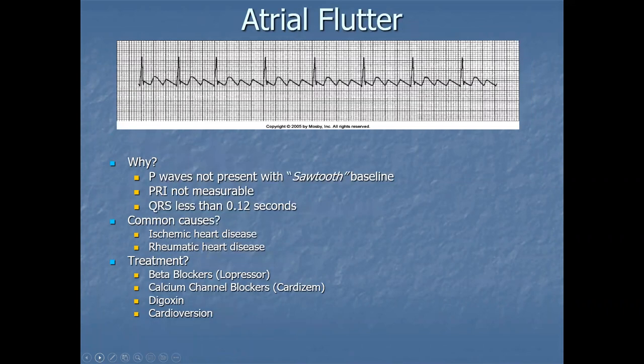Atrial flutter: the rate is somewhat irregular, but maybe not quite as irregular as atrial fibrillation. The baseline is not chaotic — it's sawtooth. Causes include rheumatic heart disease and rheumatic fever, but the same causes that contribute to atrial fibrillation can also cause atrial flutter. Likewise, the treatments are quite similar.